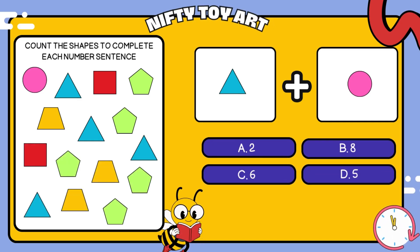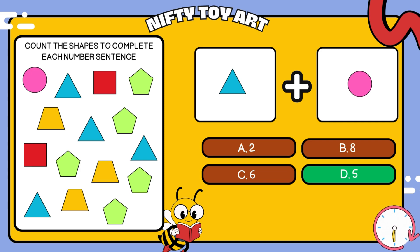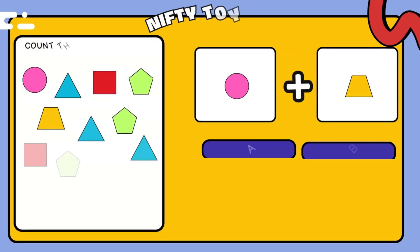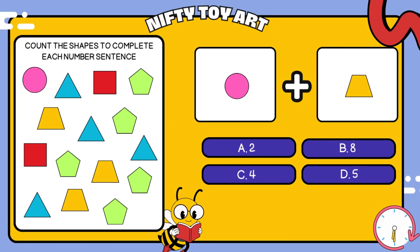I have a triangle plus circle. How many all together? That's right, four.